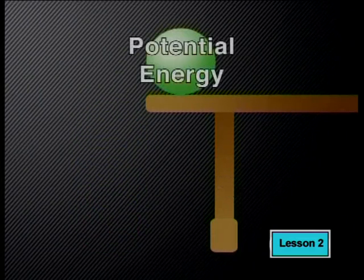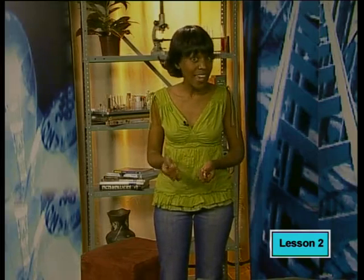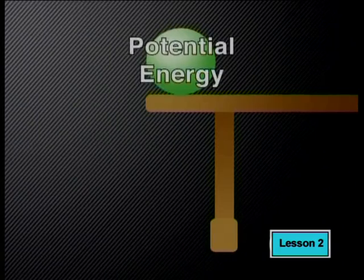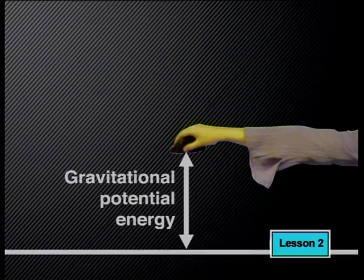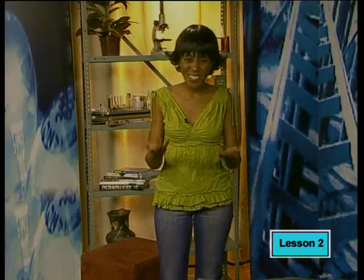Energy stored inside a body is called the body's potential energy, which is influenced by the position of a body in relation to other bodies. The energy of motion of a body — which can be a molecule, an atom, a particle or an object — is called its kinetic energy, increased or decreased by the forces acting on that body. For example, if you hold a rock in the air, it has gravitational potential energy because of its position relative to the earth. Potential energy and kinetic energy are the two main groups into which we can classify all forms of energy.